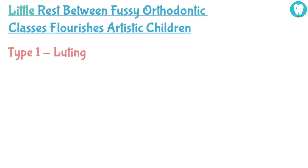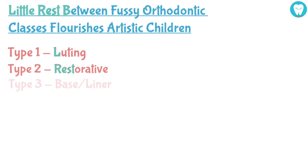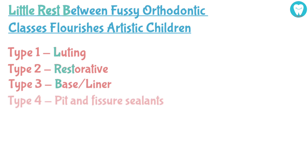Type 1, that is Luting. Type 2 is Restorative — from 'rest' and 'between.' The B stands for Type 3, that is Base or Liner. Type 4 is Pit and Fissure Sealants, which you can see represented by 'fussy.'